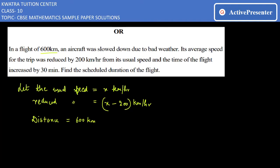So you have usual speed which is x km per hour, reduced speed is x minus 200 km per hour. We know that total distance covered is 600. So time taken at reduced speed: 600 over x minus 200, minus 600 over x is equal to half.